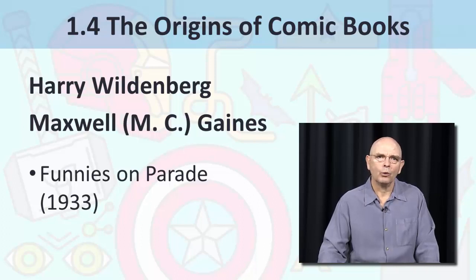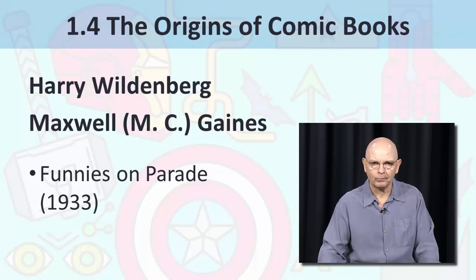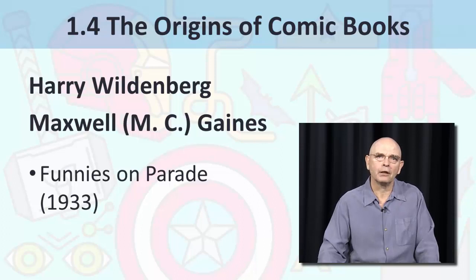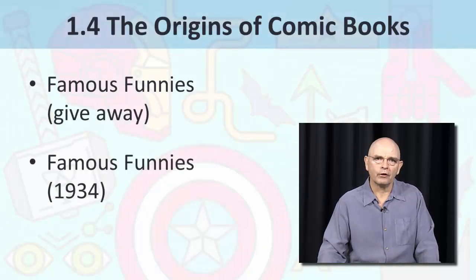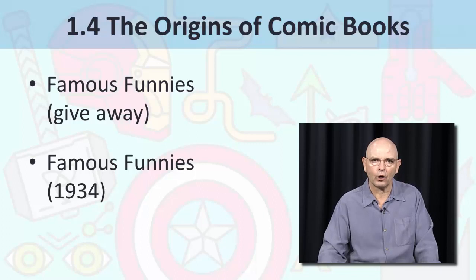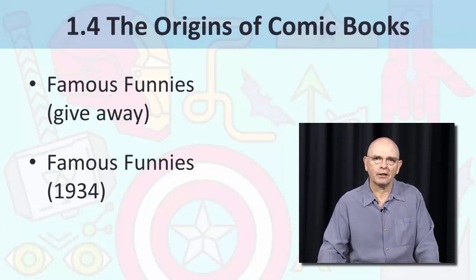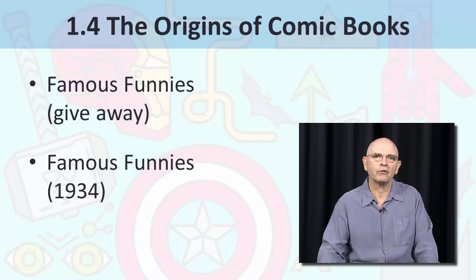This was the first comic publication with the physical attributes of what we would now call a comic book. Eastern also produced comic book premiums for Kinney Shoe Stores, Milko Malt, Wanamaker Stores, Wetina, and Canadian Dry. All Eastern comic book premiums reprinted popular newspaper comic strips. Eastern produced Famous Funnies, which contained no advertising, as a free premium for various products, printing between 100,000 and 250,000 copies for each product. MC Gaines believed they could be sold direct to the public through newsstands, and in late 1933 he placed several dozen copies of Famous Funnies with 10-cent price stickers on newsstands.